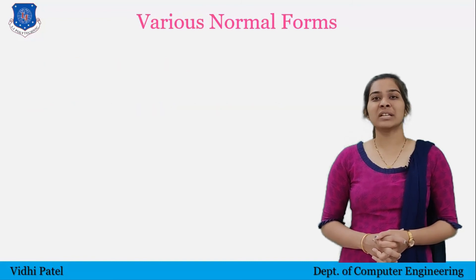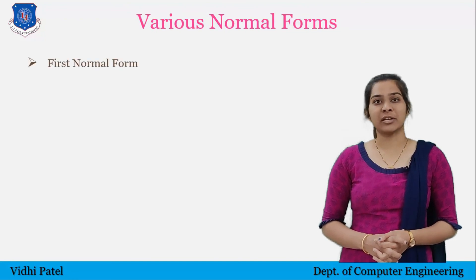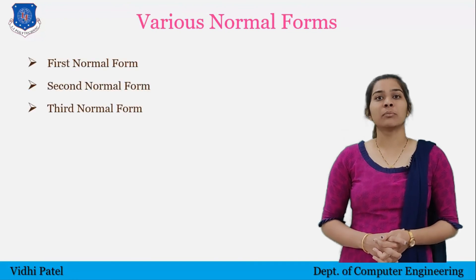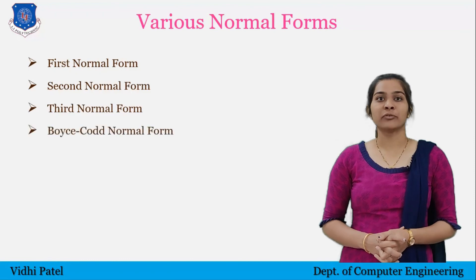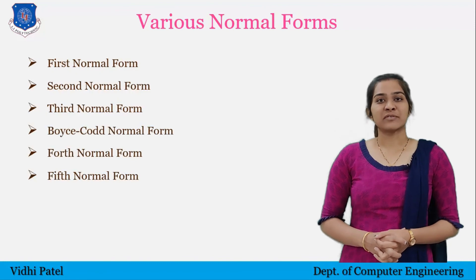There are various normal forms available: first normal form, second normal form, third normal form, Boyce-Codd normal form, and up to fifth normal form, which we will discuss in the next video.